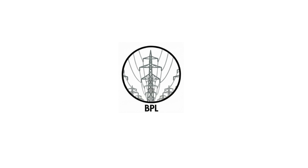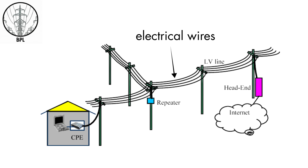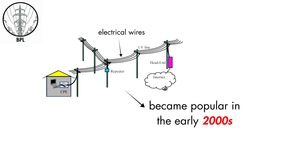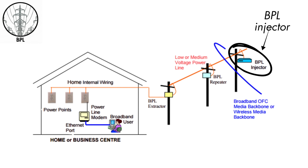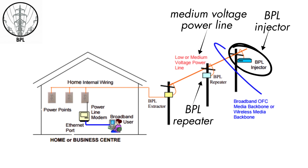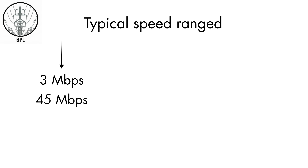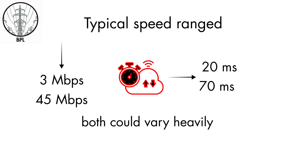Broadband over Power Line, BPL, is a technology that delivers internet using the same electrical wires that power the home. Data signals are layered on top of the normal electrical current. The idea became popular in the early 2000s, but it never became a mainstream consumer service. BPL works by injecting high-frequency data signals into medium-voltage power lines. Because the signal weakens quickly and cannot pass through transformers, utilities add repeaters and bypass units along the line. A BPL modem plugs into a wall outlet and separates the data from the electrical power, turning it into Ethernet for your router. Typical performance ranged from 3 to 45 Mbps with latency around 20 to 70 milliseconds, but both could vary heavily due to electrical noise.